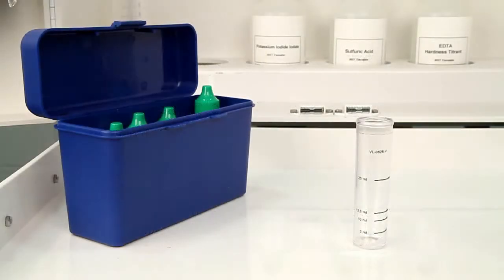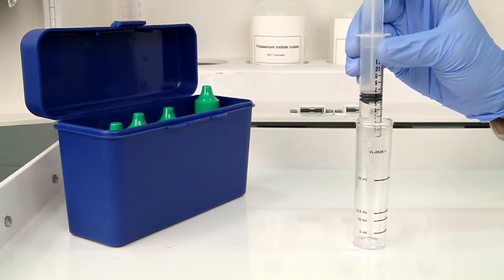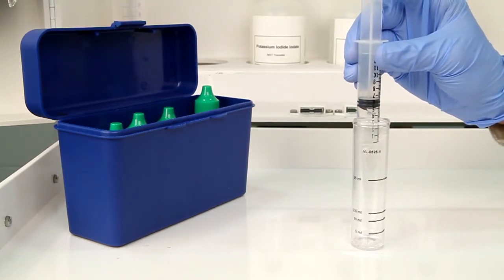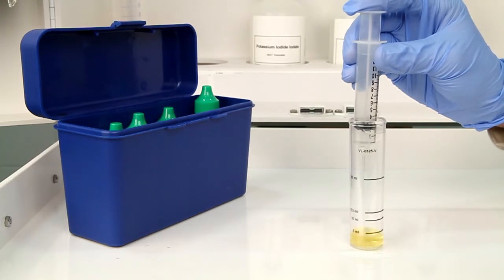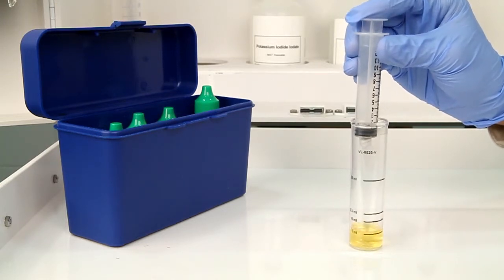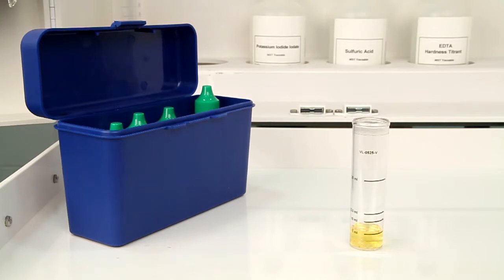Use the syringe to accurately measure your sample and then add the sample to the vial. A yellow color indicates available chlorine dioxide. Swirl the vial to mix.